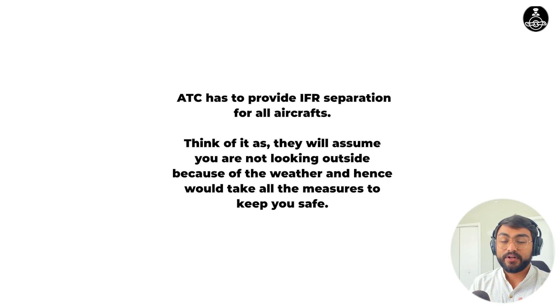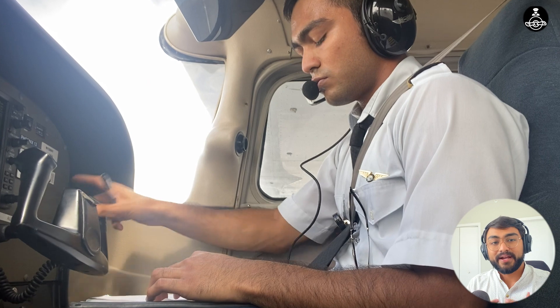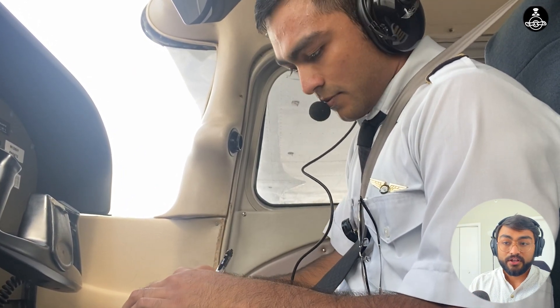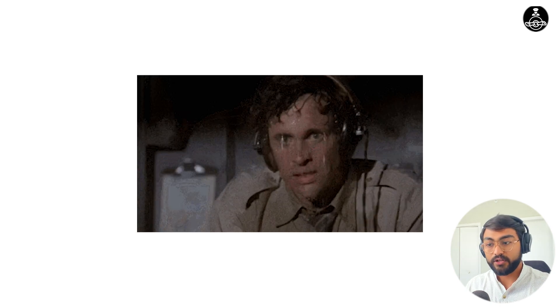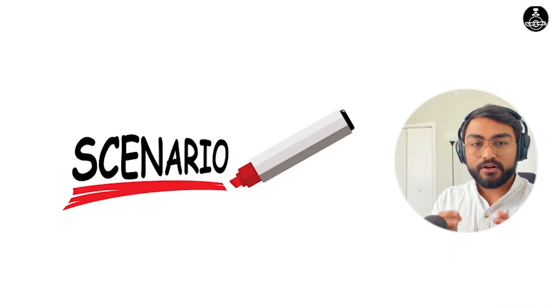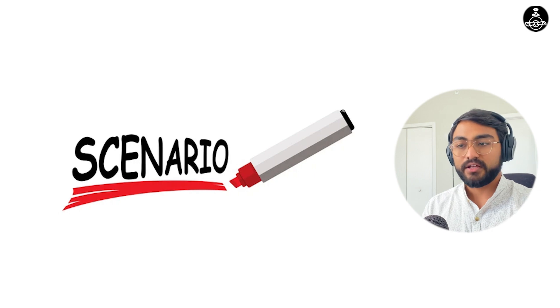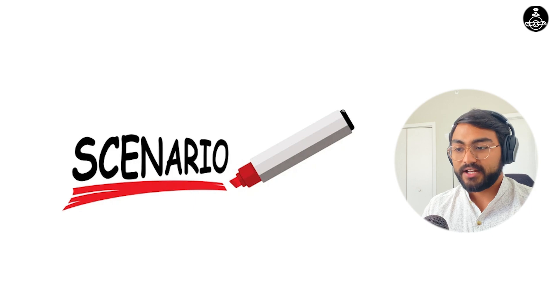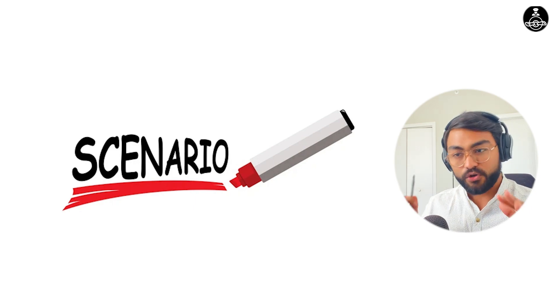Clearance void time is one such way of giving you that safety. Not knowing clearance void time might catch you off guard when you're going out of an uncontrolled airport and ATC assigns you one. You don't want to embarrass yourself by asking ATC what the clearance void time means, or even worse, you don't want to be in a pilot deviation position when you don't comply with it. What I've done here is created a scenario — and I'm trying to do this live, one-take, so that it's as natural a conversation as it can be. This is how I teach my students.